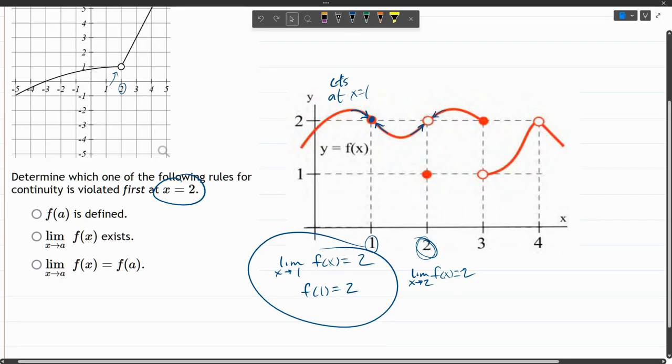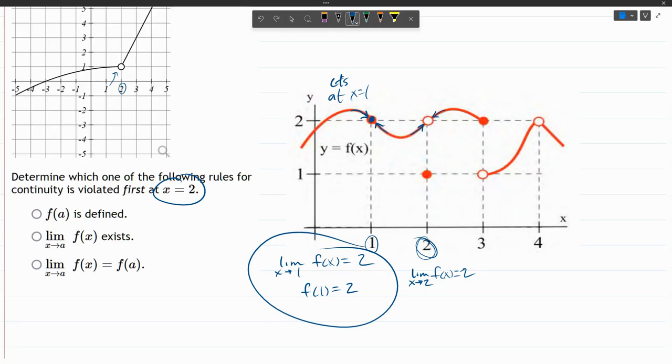But the second part, what is f of two? So if I plug in the x value two, not approaching but if x equals two, if you look right up here, that's the y value that we have. So f of two is equal to one.